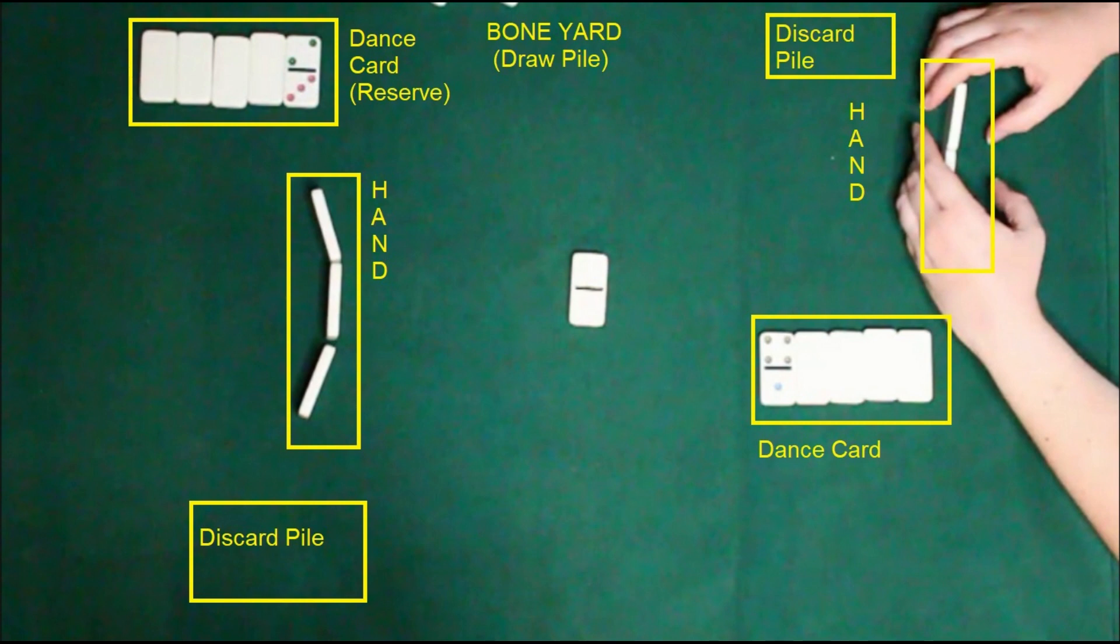Now once that happens, once somebody has played the double, they will continue their turn until they can no longer shed dominoes. The object of the game, of course, is to get your entire dance card empty. If you're able to get your entire dance card empty, you will score one point.